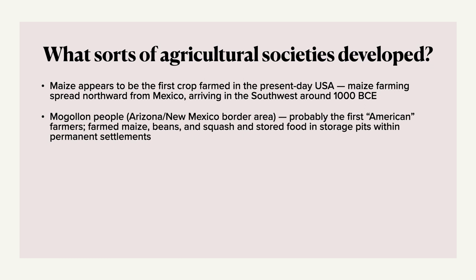The Mogollon, who lived in the Arizona–New Mexico border area, were probably the first American farmers within the present-day United States. They farmed maize, beans, and squash, and stored their food in storage pits within permanent settlements. Interestingly, most Native cultures that farmed in the United States would farm maize, beans, and squash together — they called them the Three Sisters, and multiple cultures used that name.